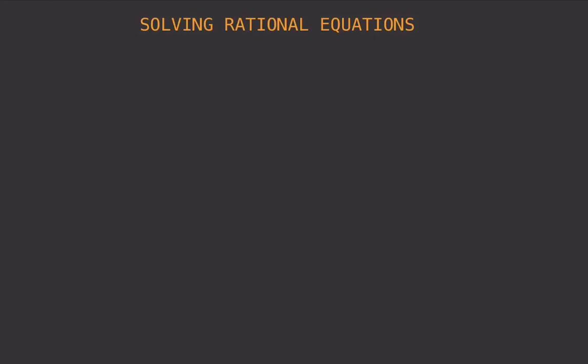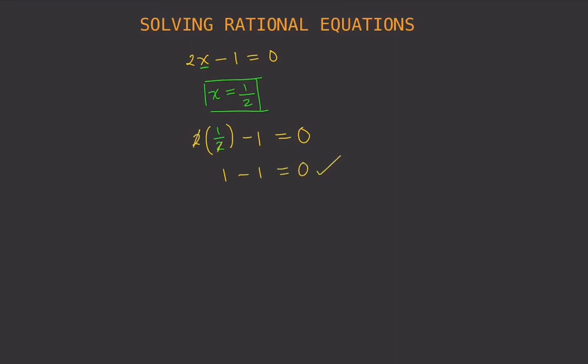In this video we are going to solve rational equations. A bit of review: solving an equation means finding a value for x that will satisfy that equation — a value for x that will make the equation a correct statement. For example, if our equation is 2x minus 1 equals 0, then the solution would be x equals 1/2. If we plug in x = 1/2, we get 2 times 1/2 minus 1 equals 0, which gives 1 minus 1 equals 0 — a true statement.